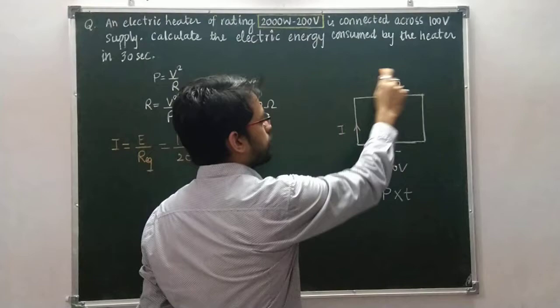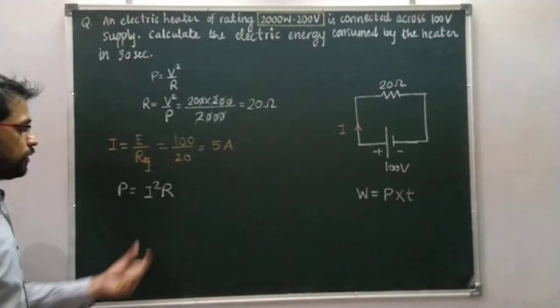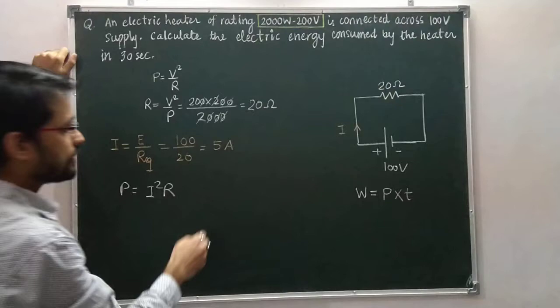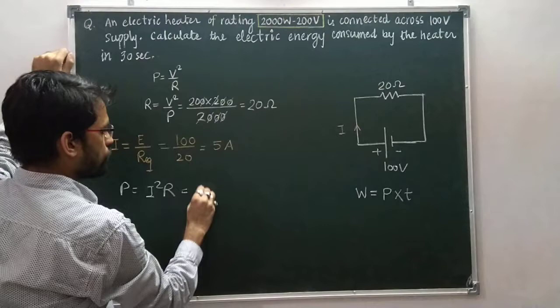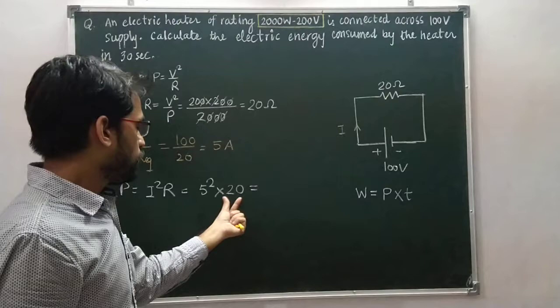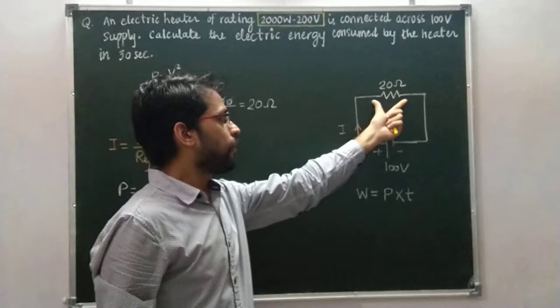Now we can easily calculate the power consumed by the electric heater, which is given by P equals I squared R. This formula is suitable here to calculate the power consumption. The current flowing through the resistance is 5 Ampere. So, 5 squared multiplied by the resistance of 20 Ohm: 5 squared is 25, and 25 times 20 gives 500 Watt. So 500 Watt is the power consumed by the electric heater in this case.